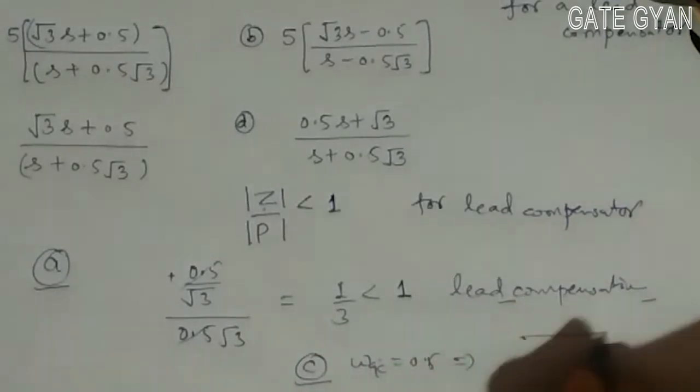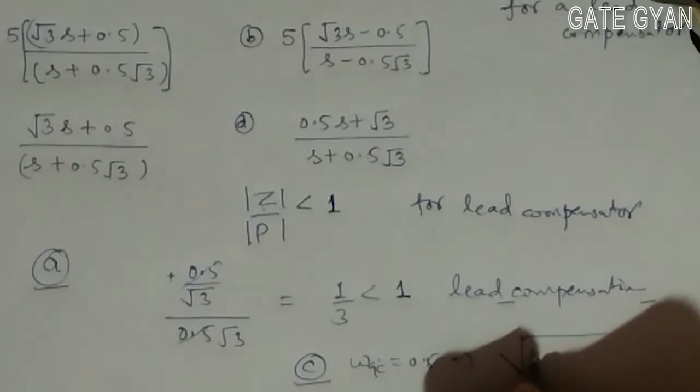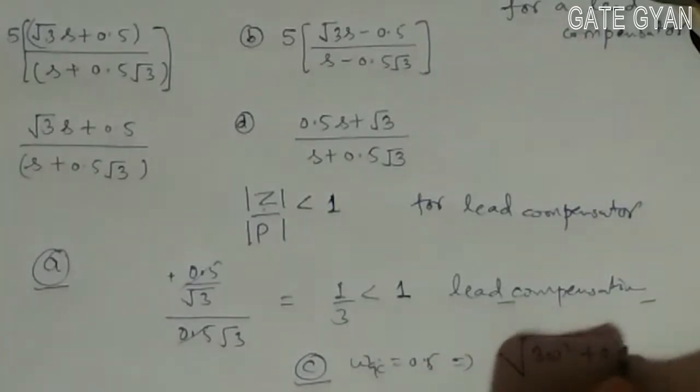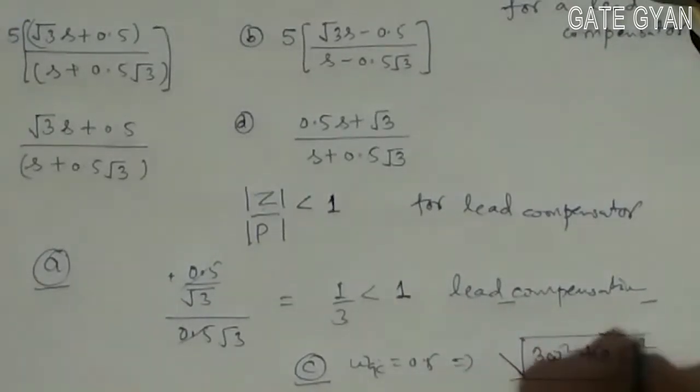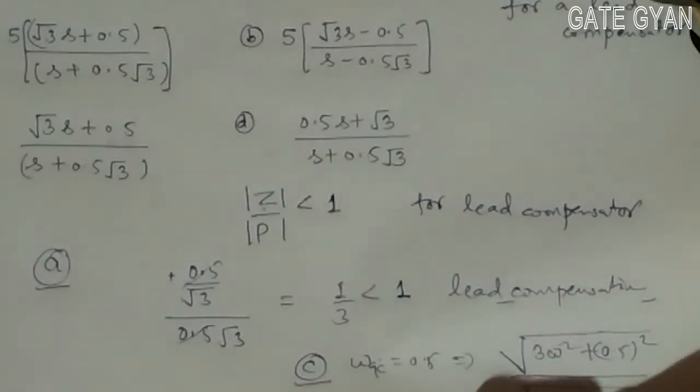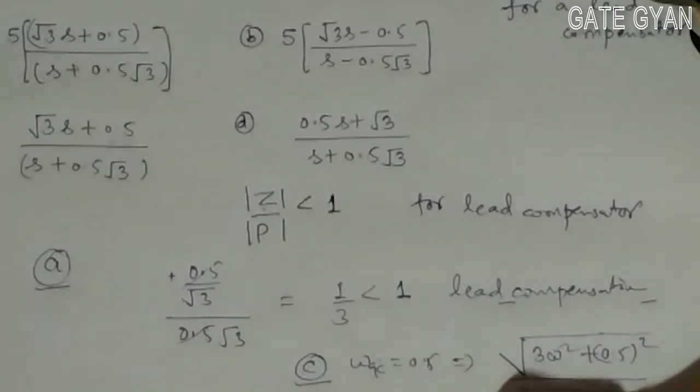the gain becomes: √[(0.5√3)²·ω² + 0.5²] / √[ω² + (3×0.5)²]